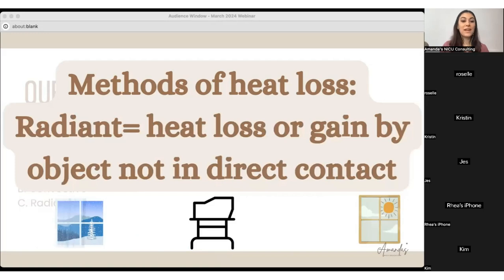And then lastly is radiant. Radiant is that heat loss or gain by an object that is not in direct contact with that person or that baby. So for us, you could think about if you're sitting in a classroom next to a window and it's a hot sunny day and you're hot, even though you're not outside in the sun, but you're feeling that heat from the window—that's radiant heat gain. Or vice versa, if it's a really cold day outside and it's snowing.